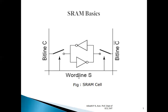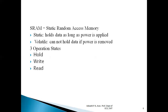Depending upon the input given to the word line, it decides whether a write operation or a read operation should be performed. SRAM stands for static random access memory. Static means it holds the data as long as power is applied to it. It is volatile in nature and cannot hold data if the power supply is removed. There are three major states of operation with respect to SRAM: hold state, write state, and read state. We will understand all three states in detail with the help of circuit diagrams.